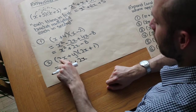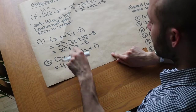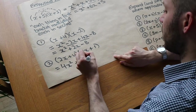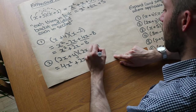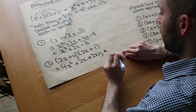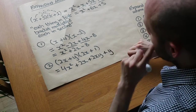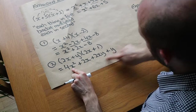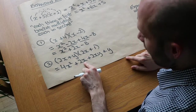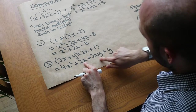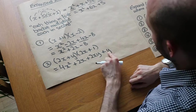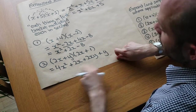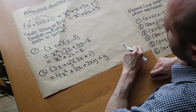Now we've done the first term times each of these, so we do the second term times each. We've got y times 2x, which is 2xy. And y times 1, which is plus y. There's nothing that collects here: the x squared term has nothing else, the 2x term doesn't match 2xy, and y doesn't collect with anything else. So we just leave it — we've expanded it but we can't simplify it.